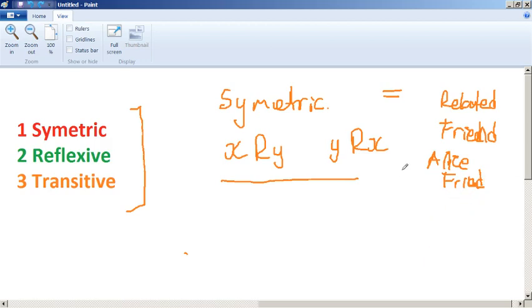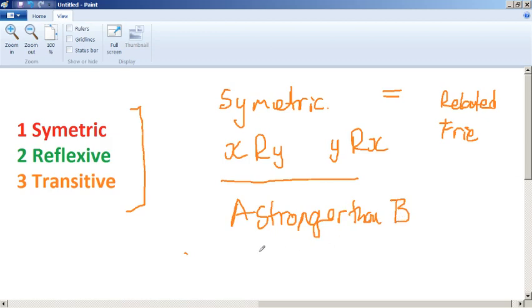So can we think of some relations which are not symmetric? Those are all symmetric. For instance, stronger than. A is stronger than B is not symmetric, because it does not imply that B is stronger than A. In fact, we know it's not true. So we can say stronger than is not symmetric, and greater than is not symmetric. So A greater than B does not imply that B is greater than A. So that's symmetric, and now let's talk about reflexive.